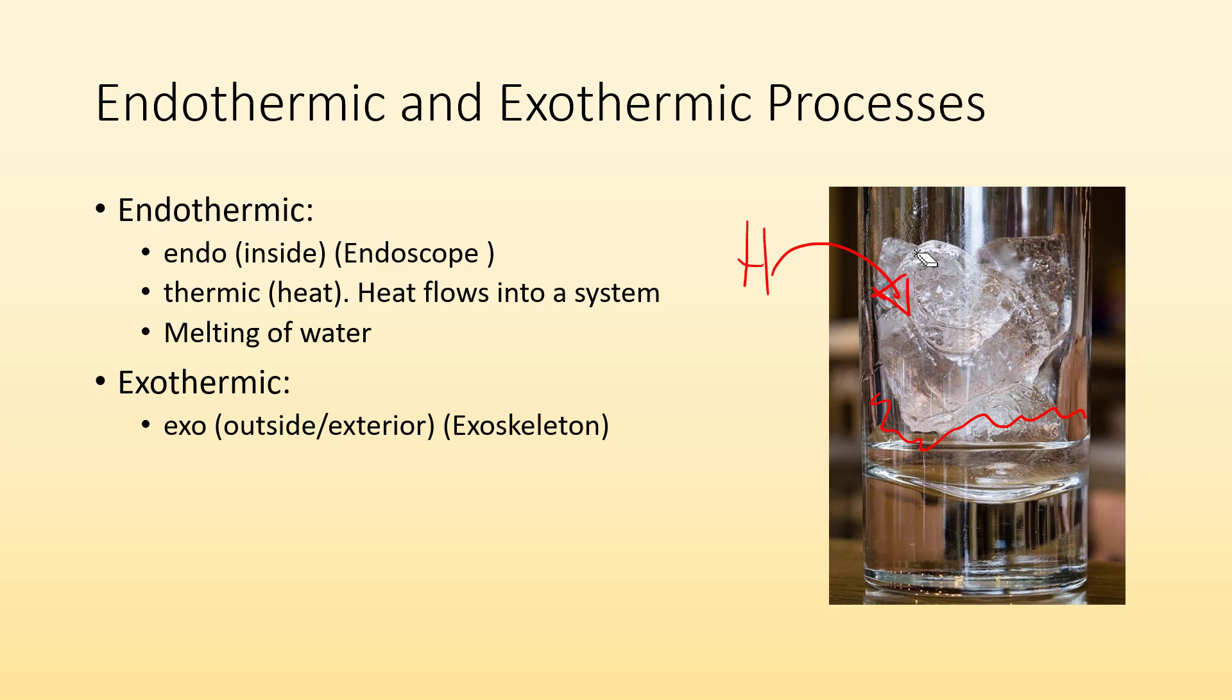Exothermic processes. Exo means outside. Things like exoskeleton. Like bugs have exoskeletons. They have skeleton on the outside of them. And thermic, again, means heat. So we have heat flowing out of a system. So the opposite, like freezing of water. So like this water has a certain amount of heat to it. If it gets rid of it, then it can freeze. So you've got to remove the heat from that water in order to freeze it. That makes freezing an exothermic process.